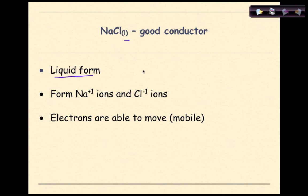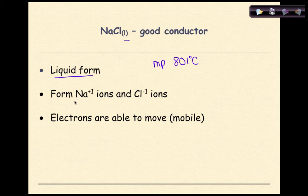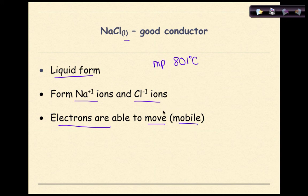Sodium chloride as a liquid is a good conductor. The melting point of sodium chloride is about 801 degrees Celsius — quite a high temperature. When melted, sodium ions and chloride ions are free to move, making molten NaCl a good conductor of electricity, meaning electrons are mobile. Molten sodium chloride is used in industry for various processes.